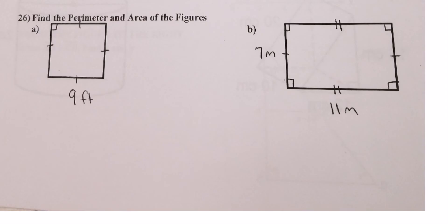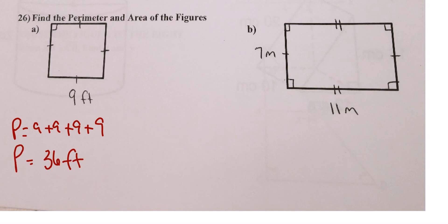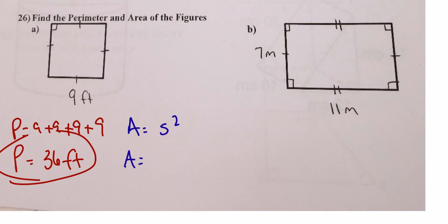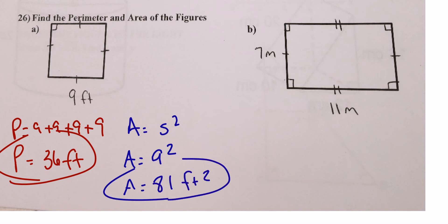For the square: perimeter = 9 + 9 + 9 + 9 = 36 feet. Area for a square is side squared, so 9² = 81 square feet. Don't forget your label.